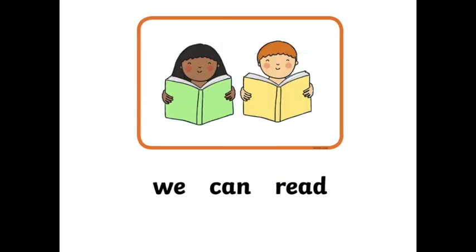This sentence has we in it. Are you ready to read it with me? Say after me: We can read. We. Say it like this: We can read. Again: We can read. Where is the word we in this sentence? Use your finger to point to we. We. We can read.